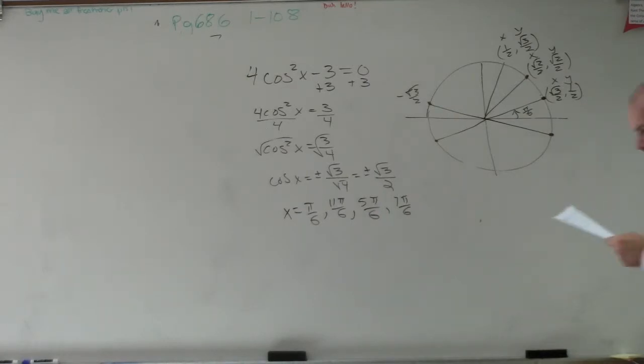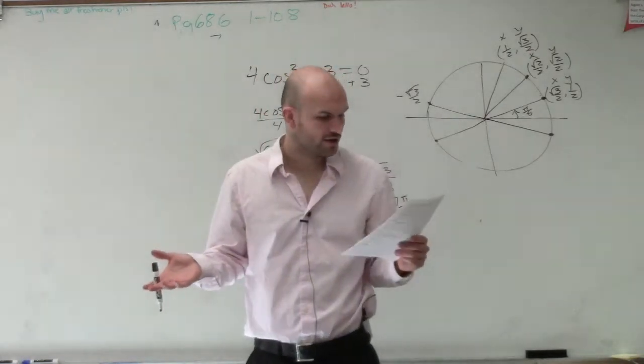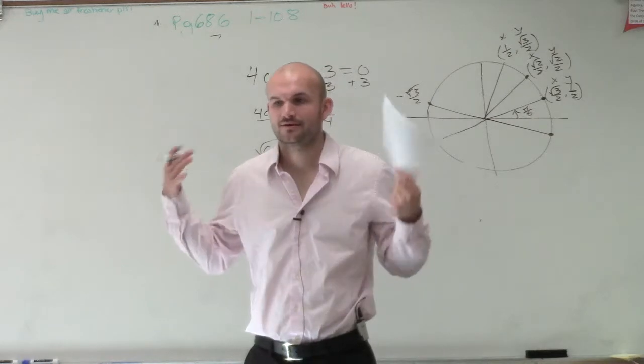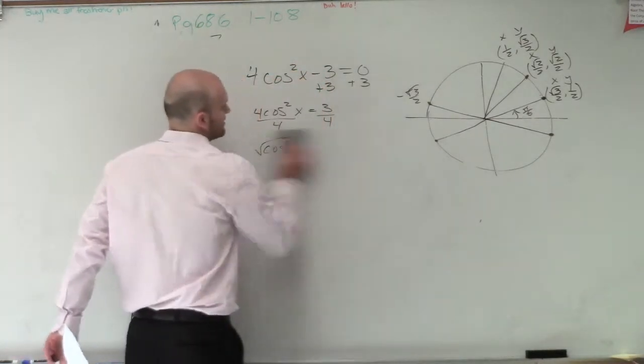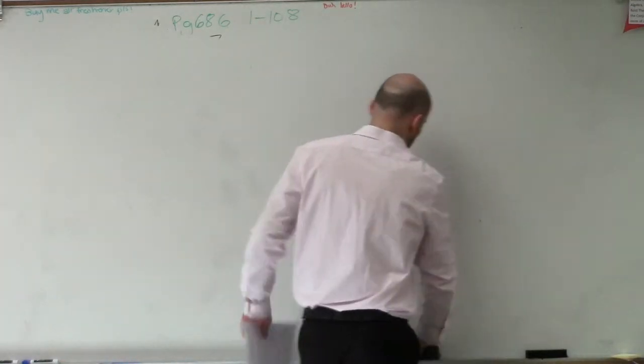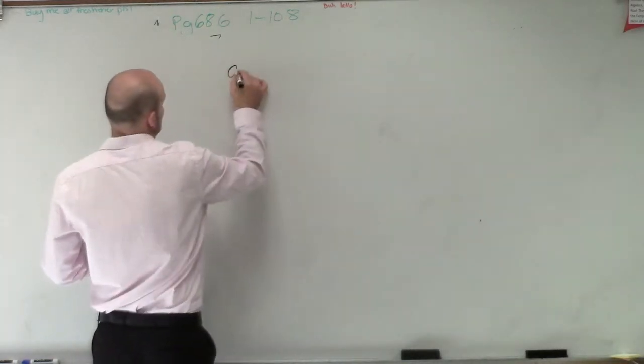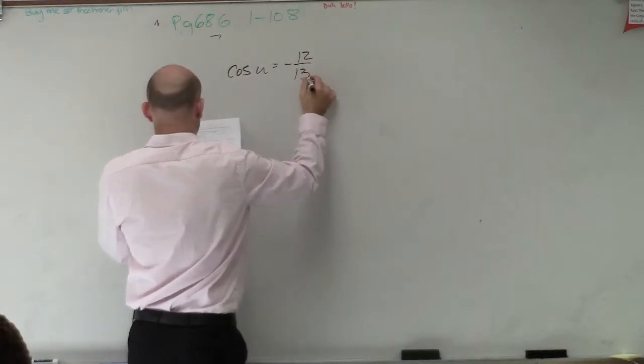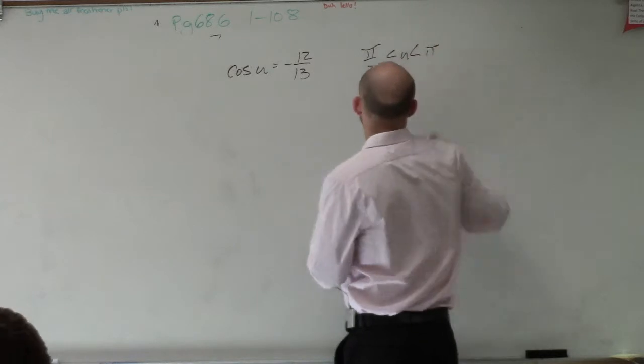So given cosine of u equals negative 12 over 13. This was number 37. If you're given an angle or a point that's not on the unit circle, we always remember we have to make sure we create a triangle. Some things are sticking to us.